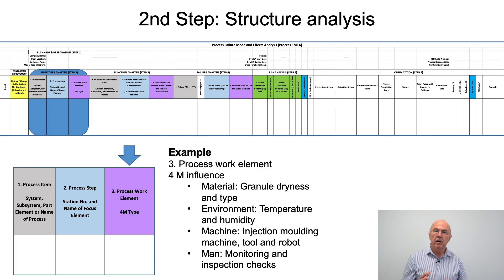The third part of filling out the form for step two is the process work element. So this is taking the work that we did in the 4M analysis and at a high level thinking about what is the material influence, the influence from the environment, the influence from the machine, the influence from the man, and potentially the influence of the method.